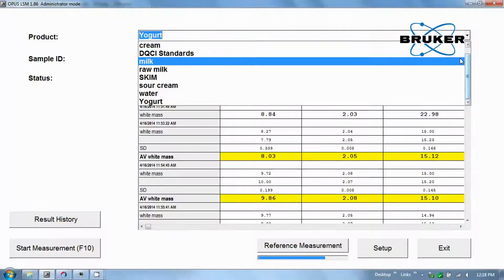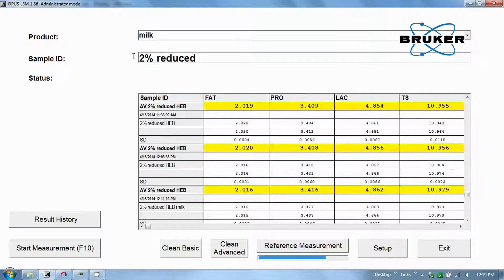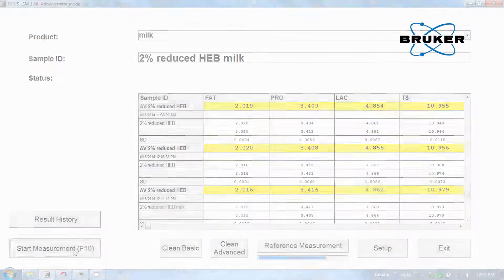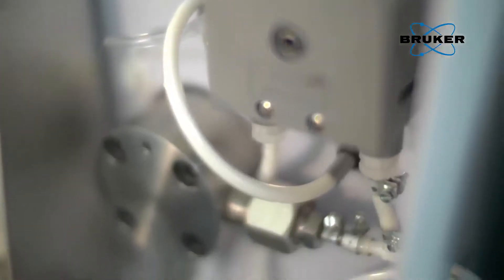Select the product, in this case milk with 2% butterfat, from the drop-down menu and start the measurement. The milk is pumped into the MPA through the homogenizer, and your results appear on screen.